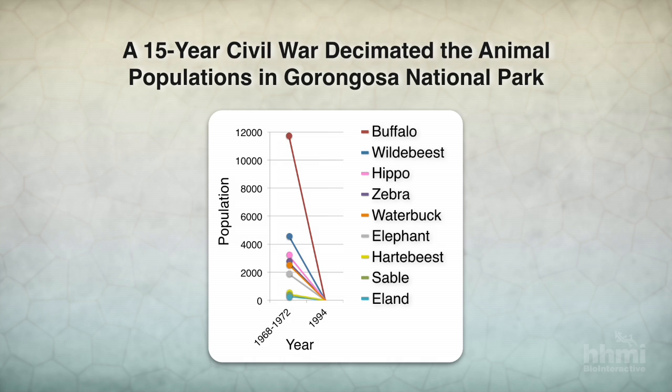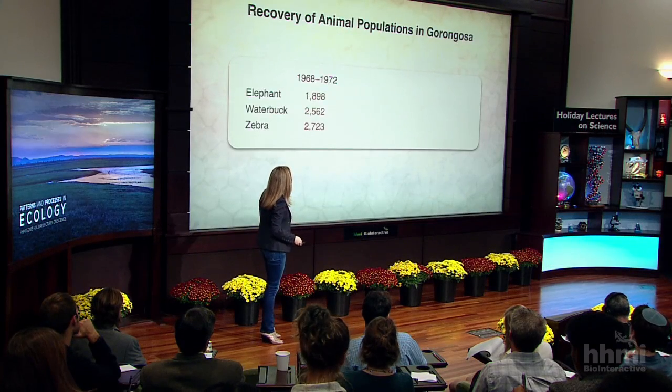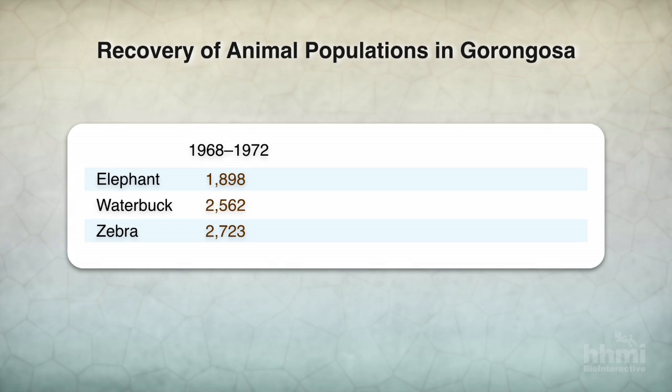They didn't go extinct, but by 1994 we only had a handful of each species. Now, this offers a really interesting situation — it's a very sad story, but now that there are huge efforts to restore the park, it's also a very large-scale experiment. We can see how populations recover once they've all been brought to very small sizes. We had aerial counts covering a huge chunk of the park, and we'll focus on three species: elephant, waterbuck, and zebra. They're all herbivores with roughly similar numbers before the war. After the war, only a handful remained — though that survey covered only about 4% of the habitat, these numbers are extremely small.